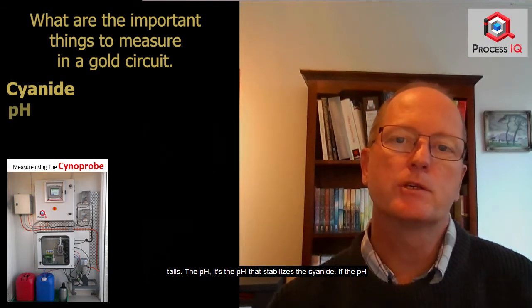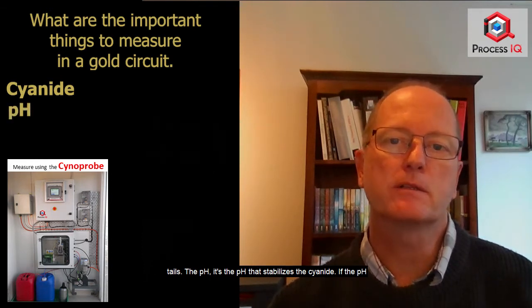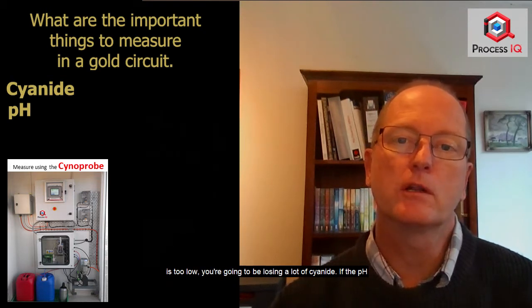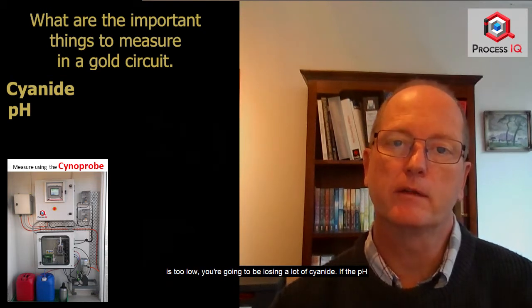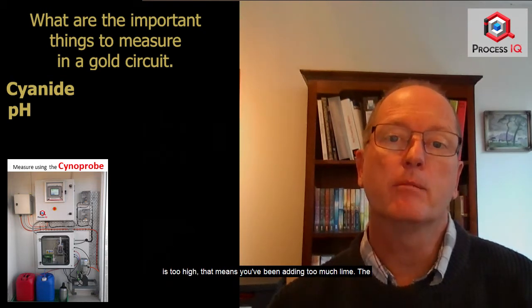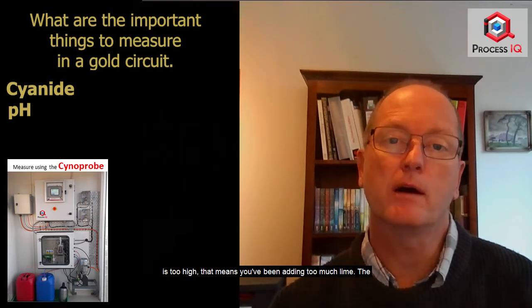The pH. It's the pH that stabilizes the cyanide. If the pH is too low, you're going to be losing a lot of cyanide. If the pH is too high, that means you've been adding too much lime.